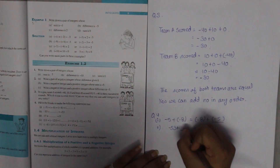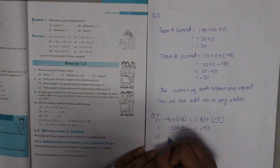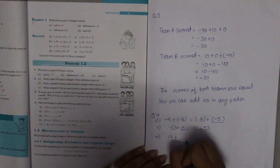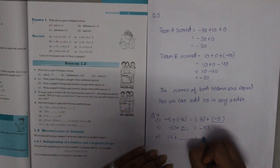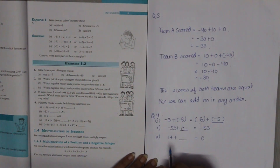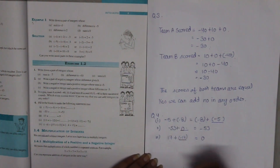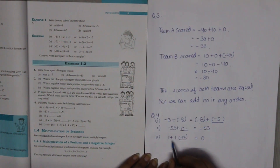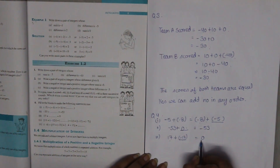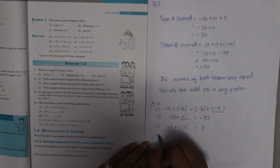Part C: 17 plus dash equals 0. We need the answer 0. For that we need to subtract the same number, so 17 plus minus 17 equals 0.